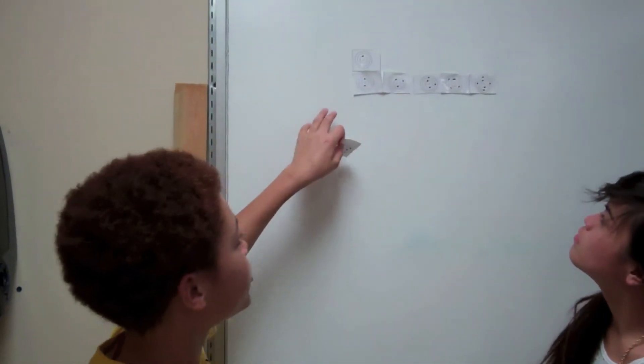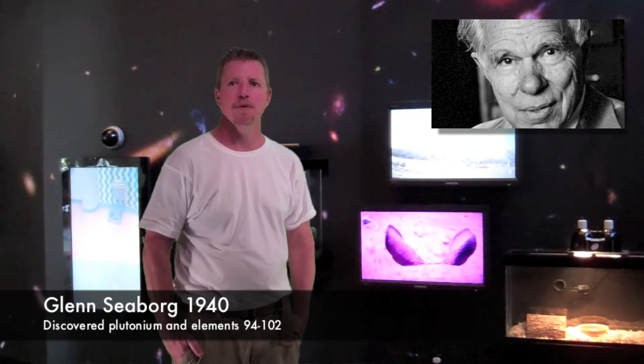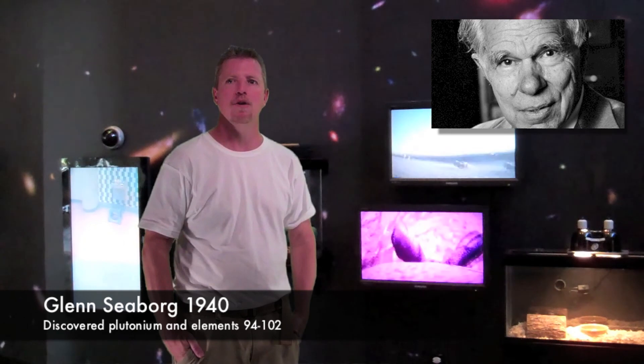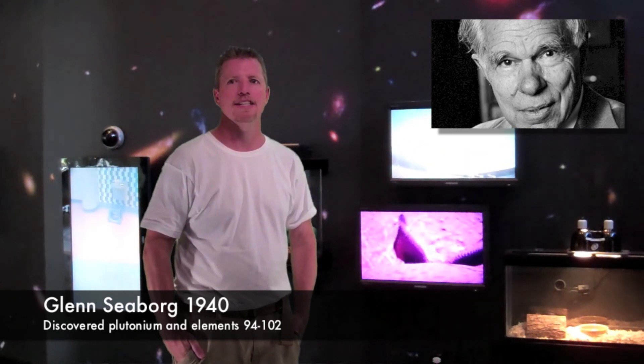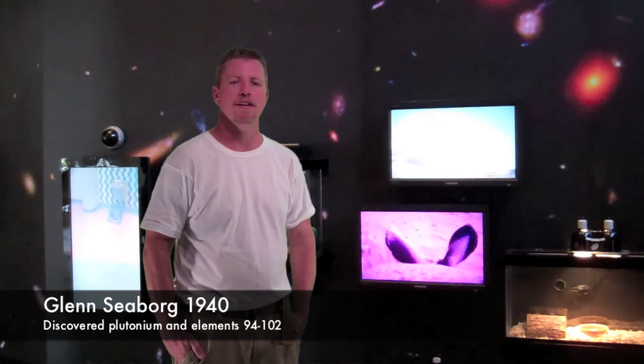Glenn Seaborg in 1940 discovered plutonium and all the elements from number 94 to 102. He moved these elements to the two rows below the main table and called them lanthanides and actinides. He co-authored the discovery of ten elements, some of which were named Americium, Californium, Einsteinium, and he honored Mendeleev with element 101 named Mendeleevium.